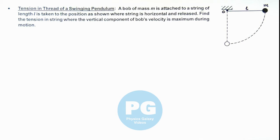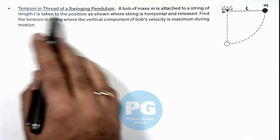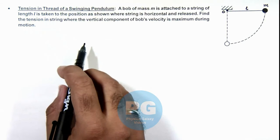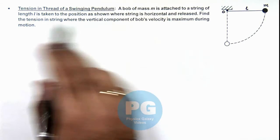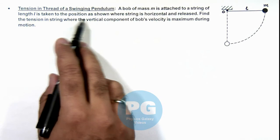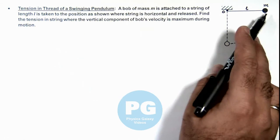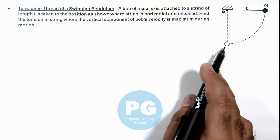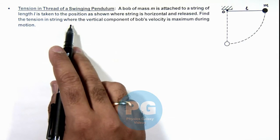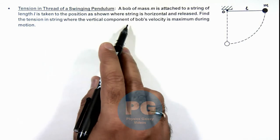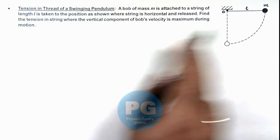In this illustration we'll discuss tension in the thread of a swinging pendulum. Here we are given that a bob of mass m is attached to a string of length l which is taken to the position as shown, where the string is horizontal. From this position it is released, and we are required to find the tension in the string where the vertical component of the bob's velocity is maximum during this motion.